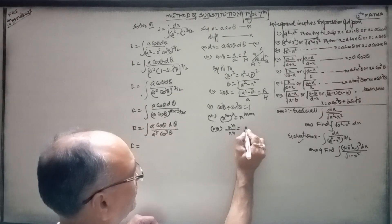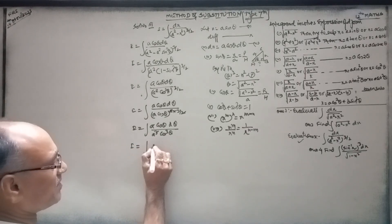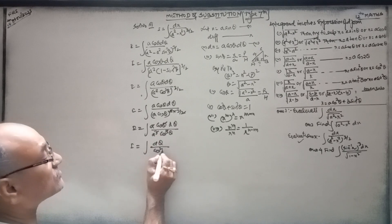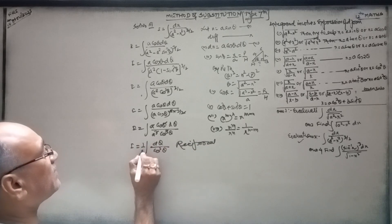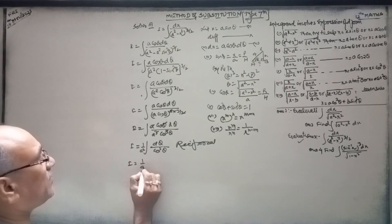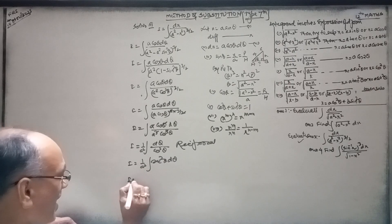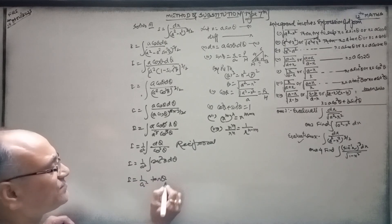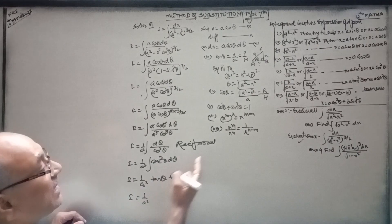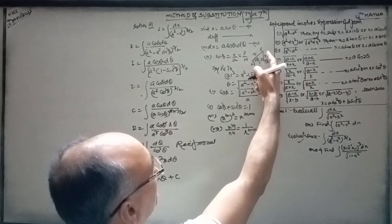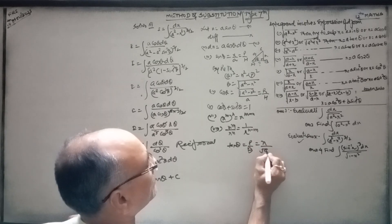Using the power rule: x^m / x^n equals 1 / x^(n−m). So I equals ∫dθ / cos²(θ), which gives I equal to (1/a²)·tan(θ) plus constant. The value of tan(θ) is perpendicular over base, which is x over √(a² − x²).